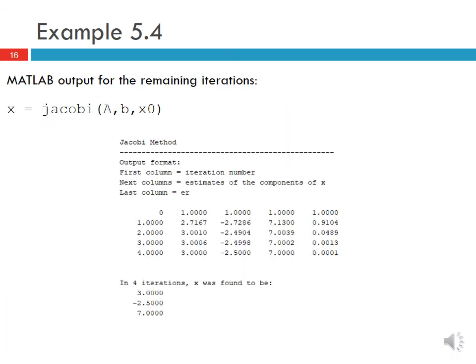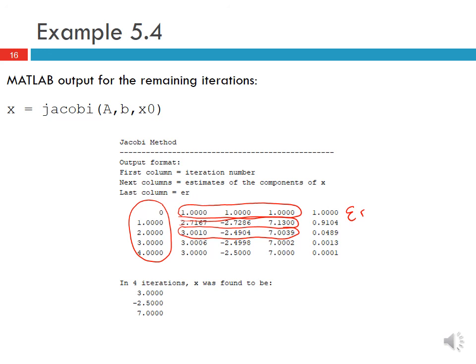I prepared a MATLAB function to perform this iteration with the A, b, and x₀ defined in this example. The output shows each iteration: the first column contains iteration numbers, the next columns show the estimates of x written as x-transpose (x₀, x₁, x₂, etc.), and the last column shows εᵣ at each iteration. In four iterations the method converged with our specified threshold, and the solution was found to be x equals [3, -2.5, 7]. That concludes the description of the Jacobi method for solving linear systems of equations.